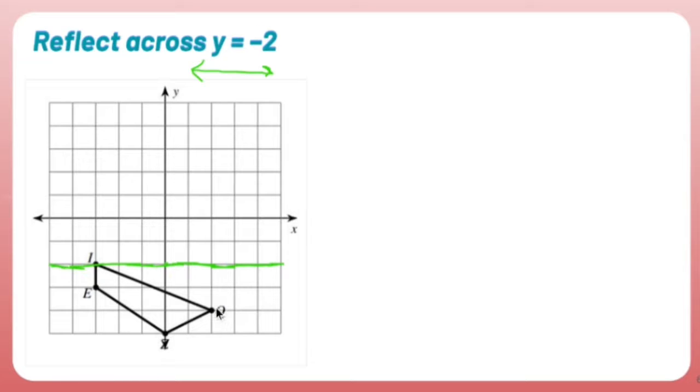So Q, for example, is 1, 2 units away from the mirror, which means Q prime is going to appear 1, 2 units away from the mirror. Q prime.